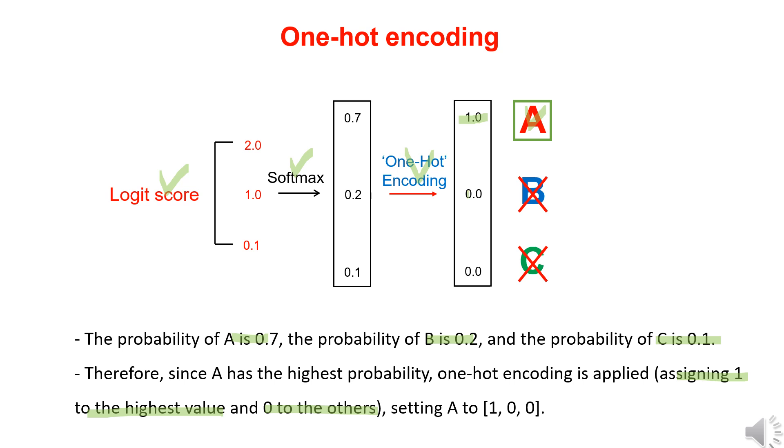So, in the end, it is converted into the class label 1, 0, 0.